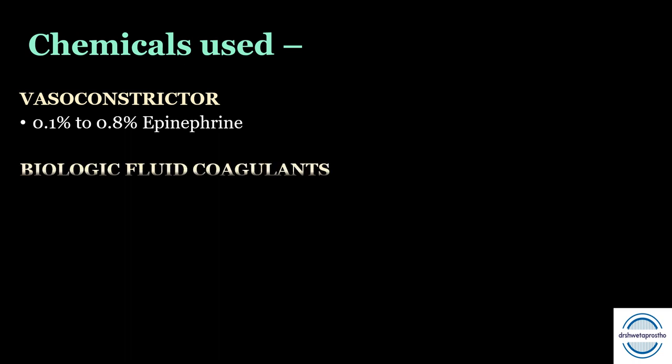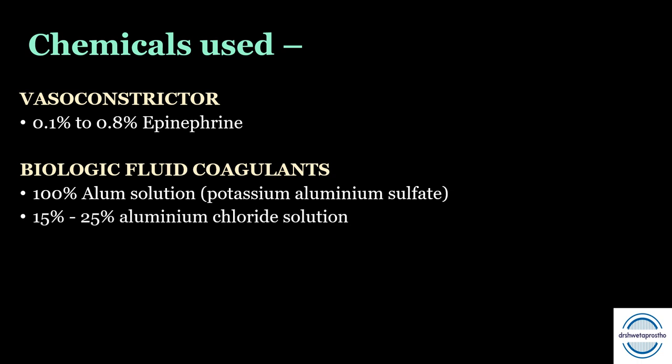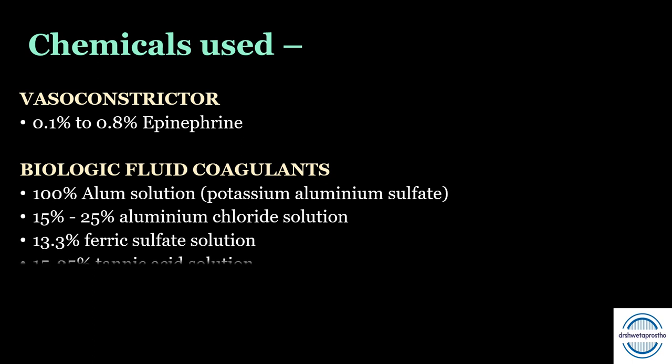Second category is biologic fluid coagulants — they coagulate blood and tissue fluids locally, creating a surface layer and decreasing seepage. This includes: 100% alum solution (potassium aluminum sulfate), 15 to 25% aluminum chloride solution, 13.3% ferric sulfate, and 15 to 25% tannic acid solution. These solutions with their percentages are very important, especially when solving MCQs.